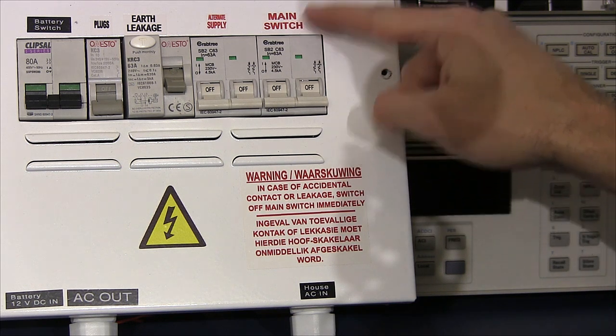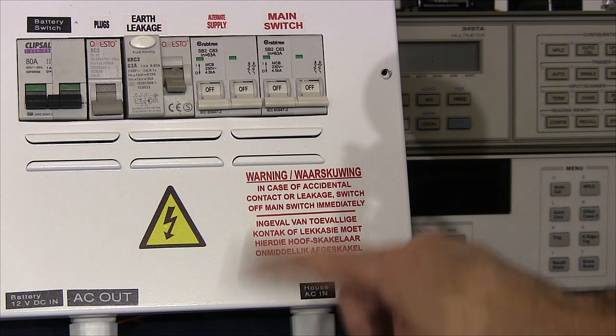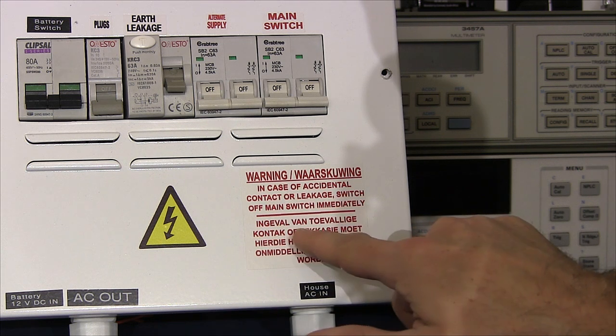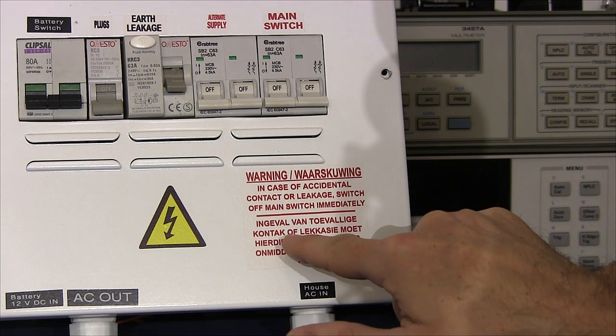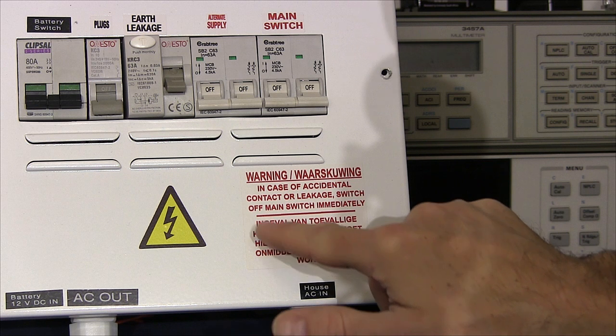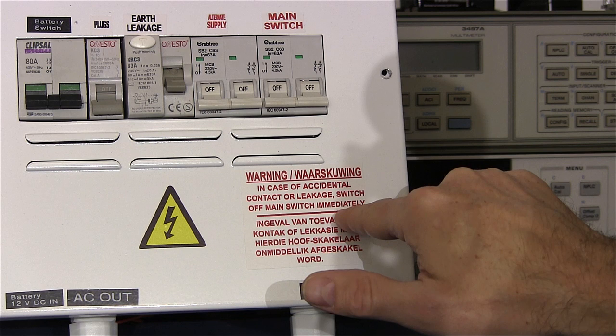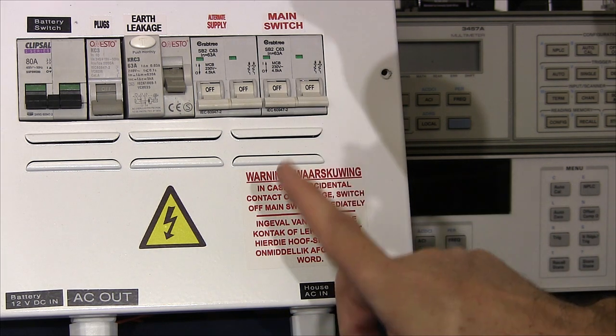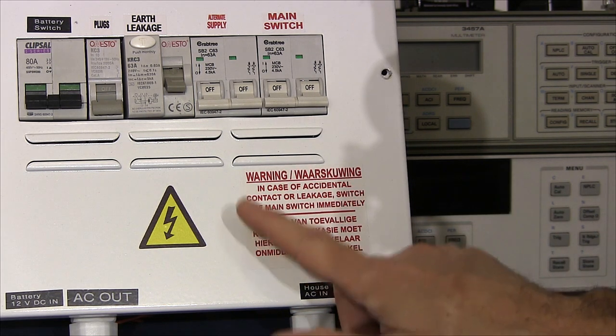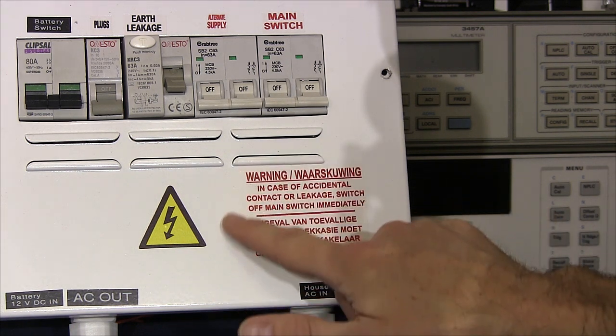The one important thing here you can see the main switch is clearly labeled also two languages. So in this case we've got in Afrikaans or in English: in case of accidental contact or leakage switch off main switch immediately. So you'd be surprised, if you are living somewhere where there are other languages someone may need to be able to read the language and that can be fairly critical just catering for the environment and the languages in your area as well.